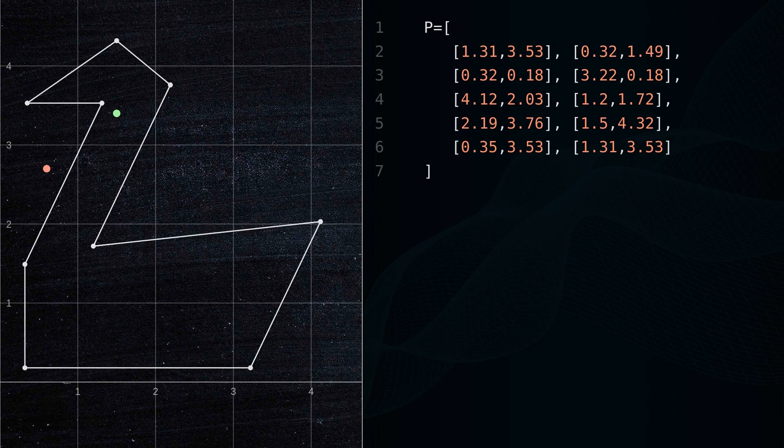This algorithm works by drawing a horizontal line from the point, and counting the number of times the line intersects the polygon's edges.